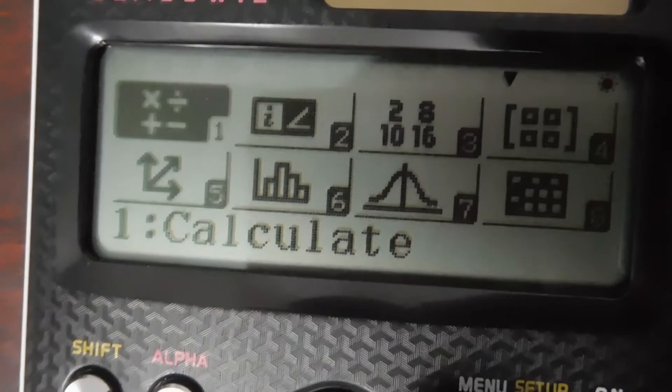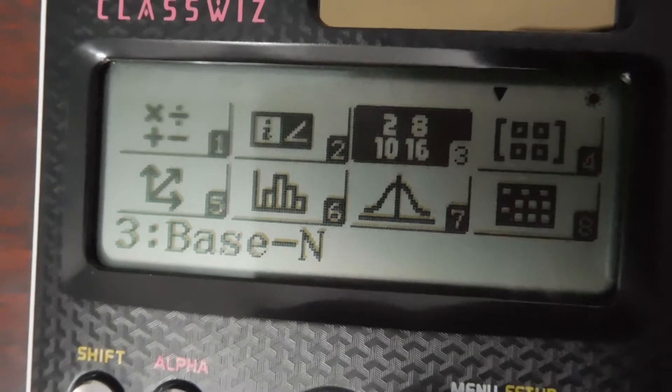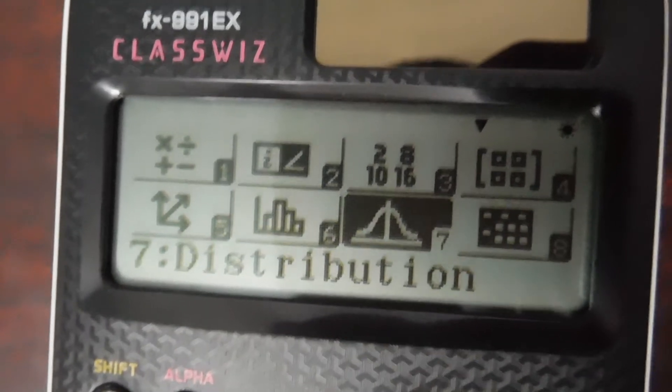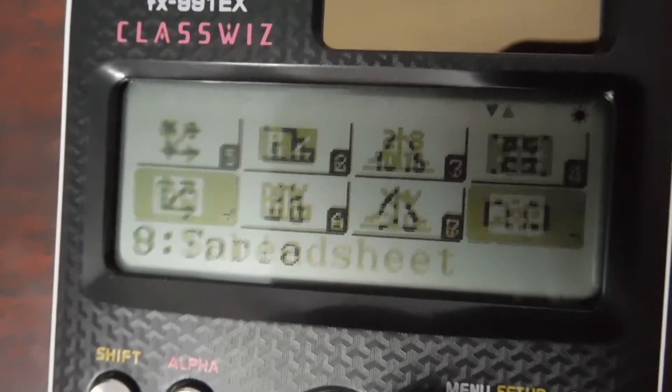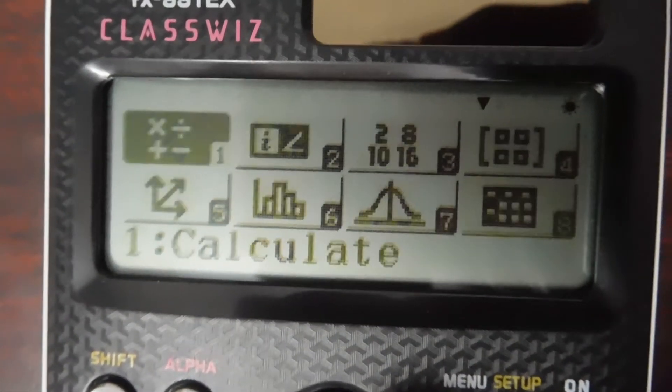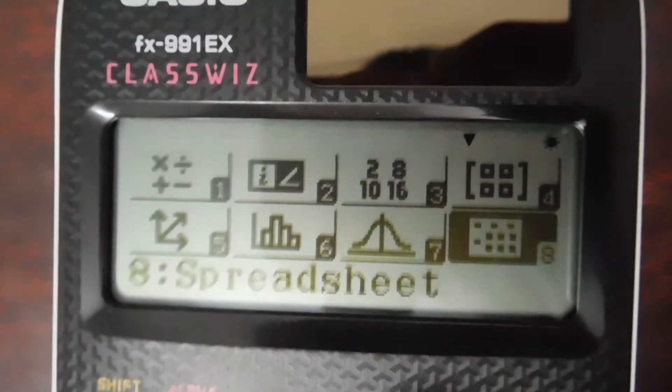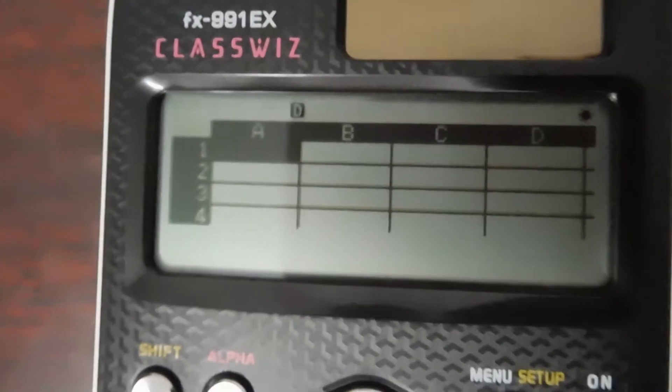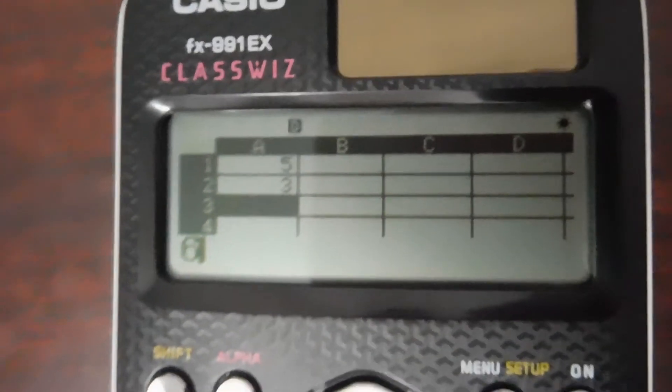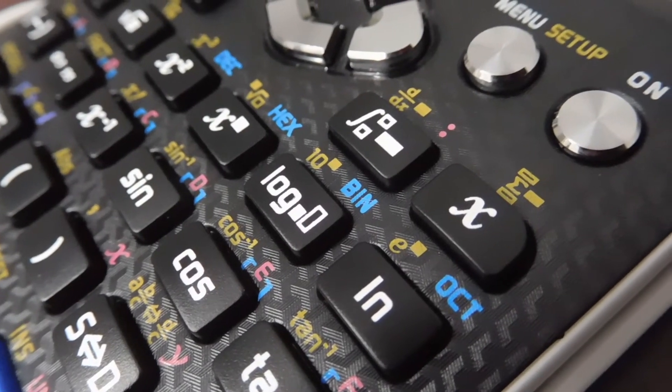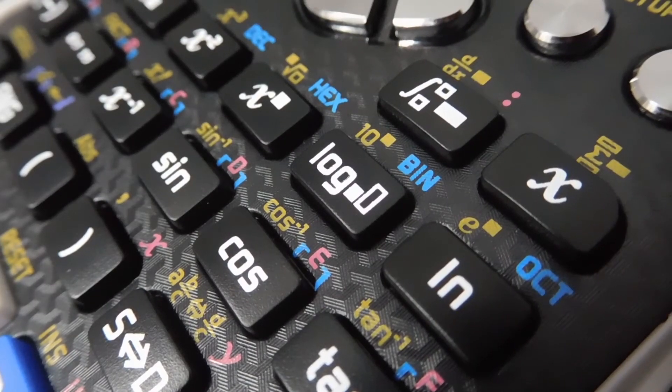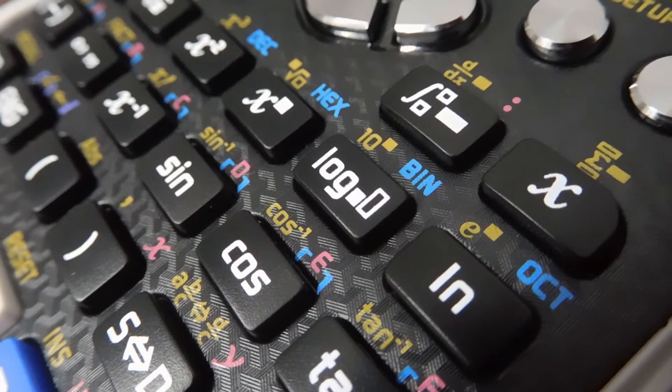It has this nice setup manual which gives you the ability to choose a particular category. It has regular calculate mode, complex numbers, matrix which even a third grader can easily solve, vectors, statistics, distribution, spreadsheet, table, quadratic equations, inequalities, and ratios. The keys are printed nicely and I love the pattern. The metallic keys are so beautiful and reflective that I can see myself off of it.